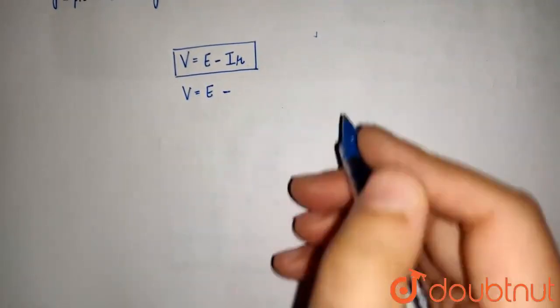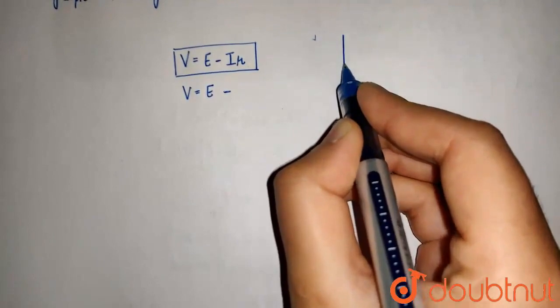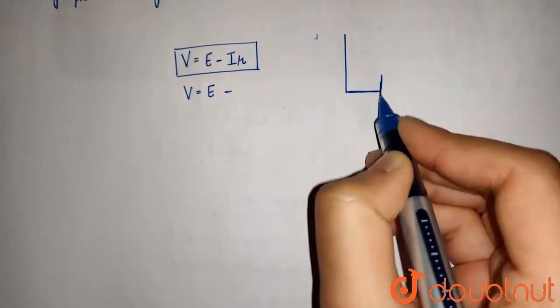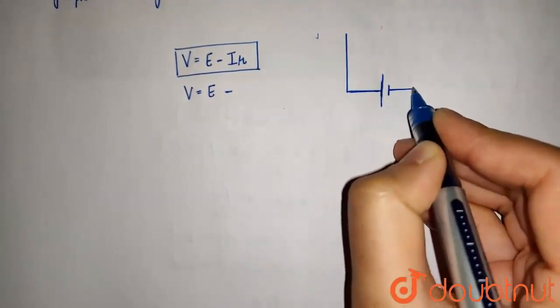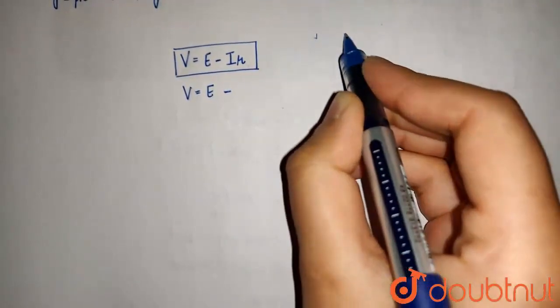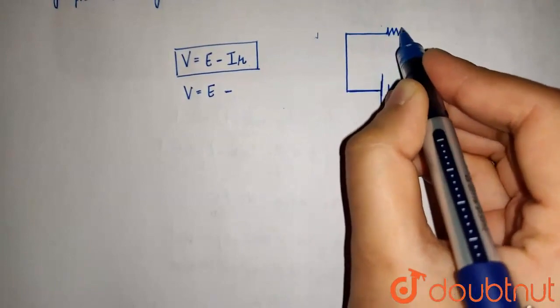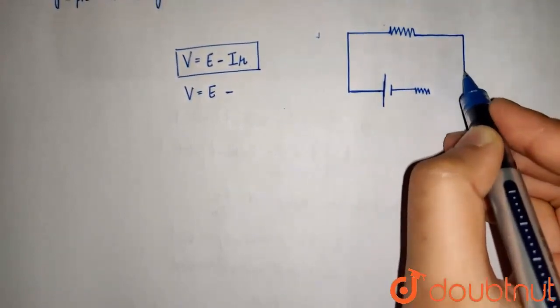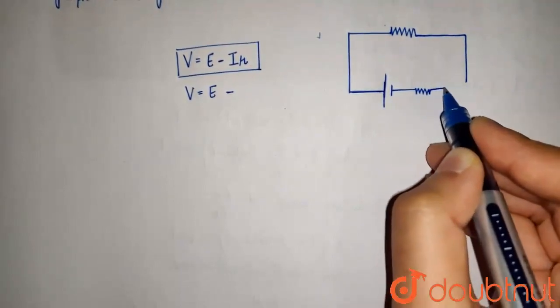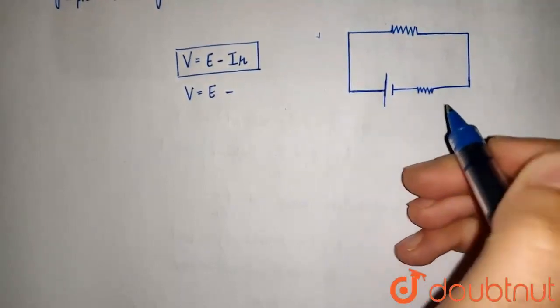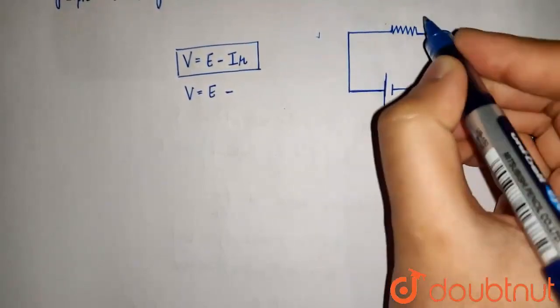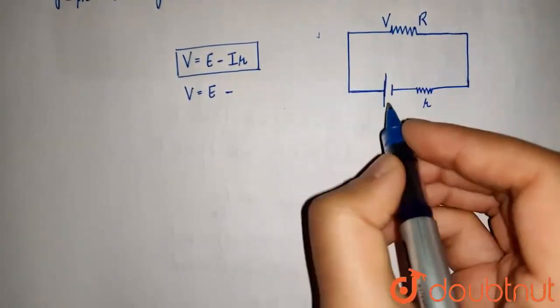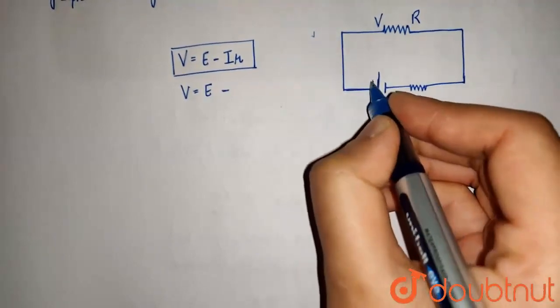So, let's draw the circuit first. Which is something like this. This is our cell. This is our internal resistance. This is our external resistance. And this is our potential difference across R is V and this is the EMF of the cell.